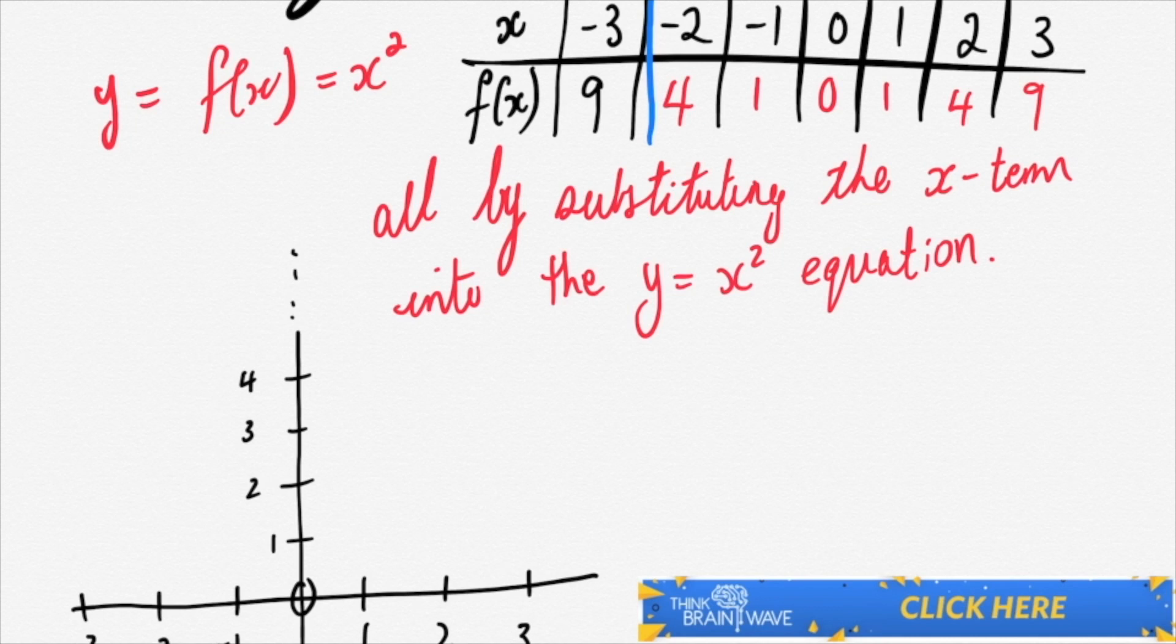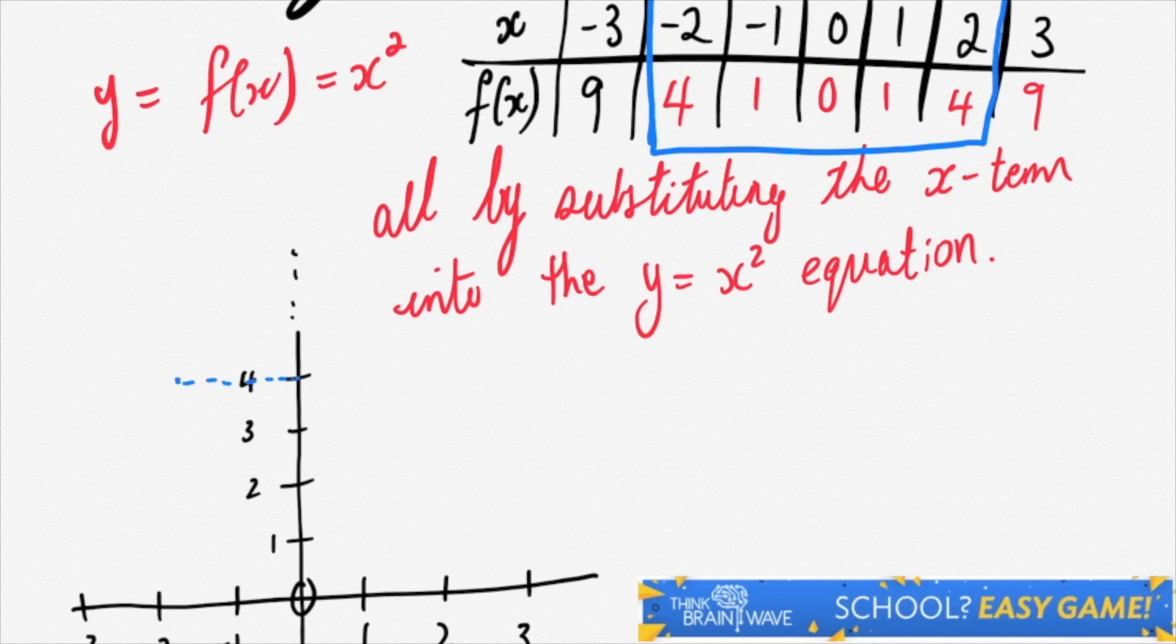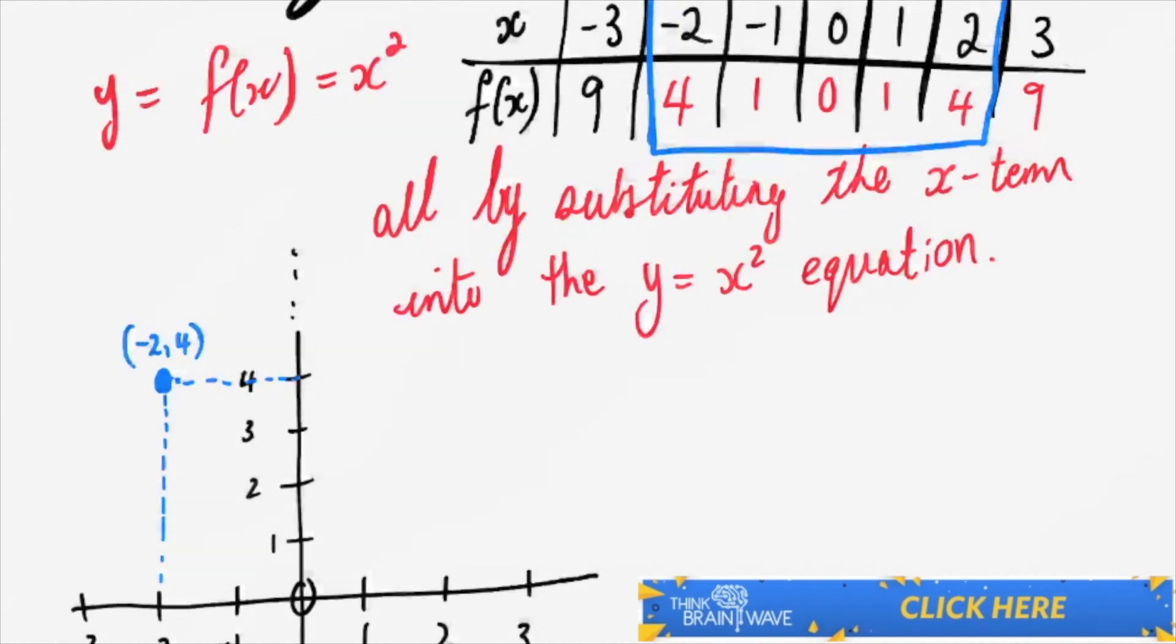As you can see, we've got x being minus 3 and 9, so we can put minus 3, 9. We then have another set of points from minus 2. So let's start with minus 2. You go minus 2 to the left and 4 up. As we've done over here, we've placed the point.